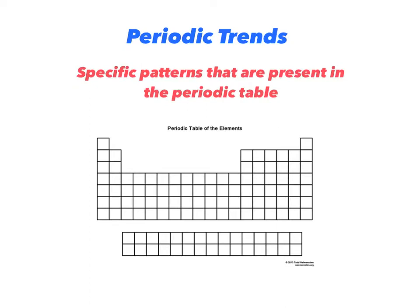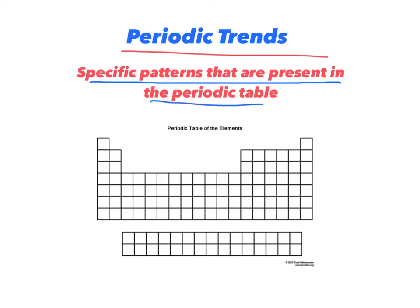Here's what a periodic trend is. Periodic trends are specific patterns that are present in the periodic table. A trend means it's just a pattern — it doesn't mean it has to follow that every time, but overall it generally will. Some terms I'll be using: I'll say 'down a group,' meaning like Group 1, the alkali metals, going from top to bottom. I'll also say 'across a period,' meaning left to right, like across Period 4. So I'll be using those terms quite a bit.